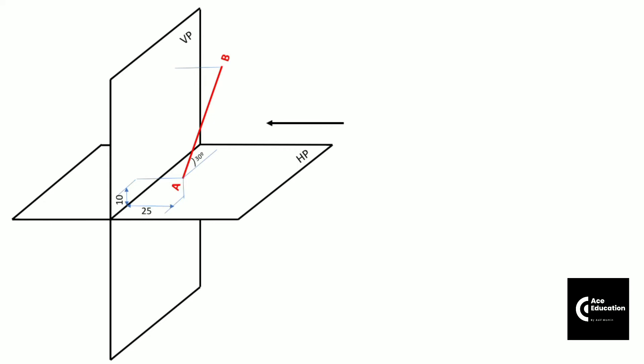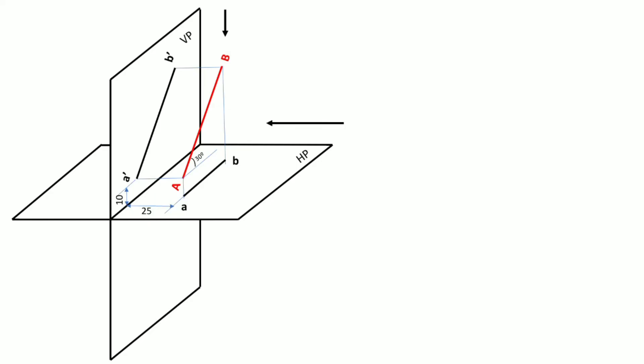When you project this line on the vertical plane from the observer's direction, you get the projection of line AB at its true length — it is true length because the line is parallel to the vertical plane. When you project this line from the top, you get the apparent length of line AB on the horizontal plane as the top view. Even though this top view is the apparent length, the line is parallel to the XY line since it is parallel to the vertical plane. We draw the XY line first after rotating the horizontal plane.